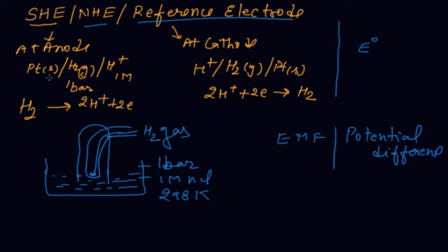A foil of platinum coated with platinum black is immersed in the KCl solution. At the anode, it is represented as platinum with hydrogen converting into H+ at one bar pressure — this means loss of electron at the anode. At the cathode, H+ is reduced to H2 on the platinum-coated platinum surface.